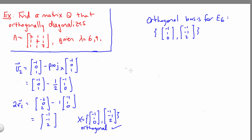Now at this point we've used the Gram-Schmidt process to build an orthogonal basis for the eigenspace E6, but what we really need is an orthonormal basis. We need to take each vector in this set here, divide through by its length.